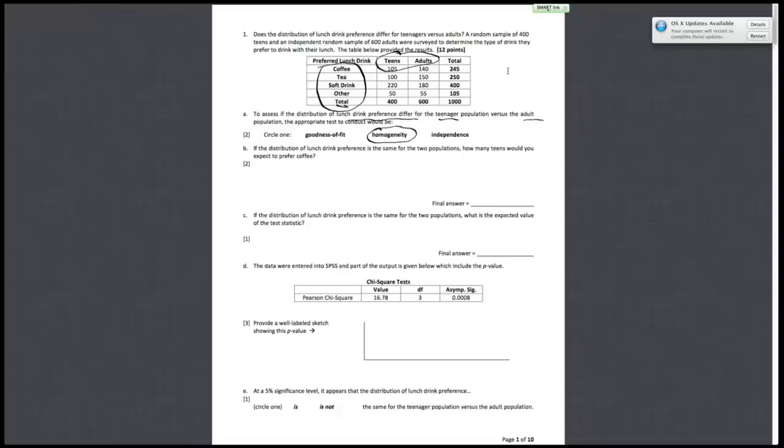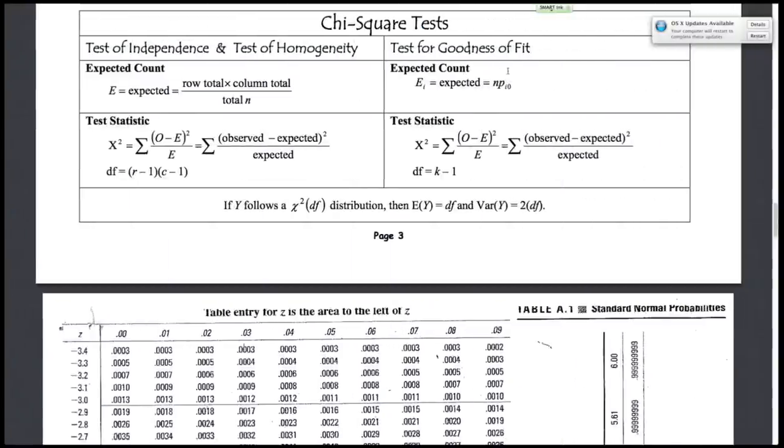The second question asks, if the distribution is the same for the two populations, how many teens would you expect to prefer coffee? Let's refer to our formulas. They're asking us for the expected counts in the test of homogeneity.